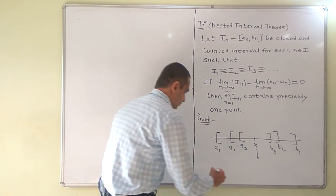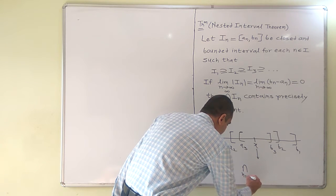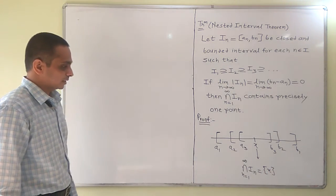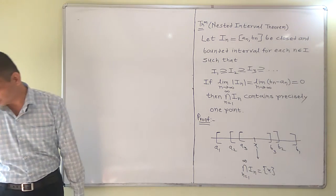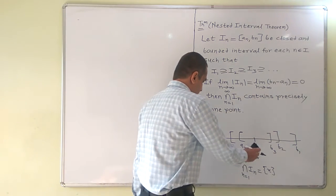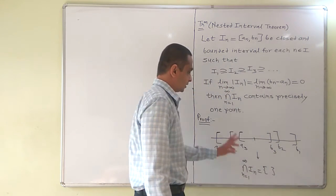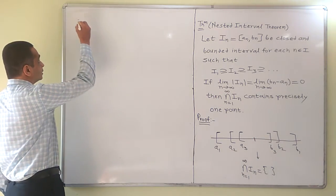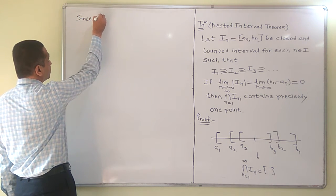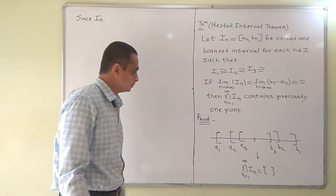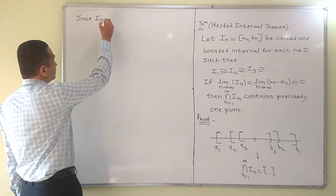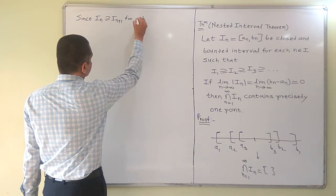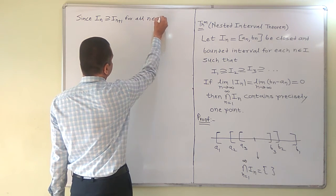So what we have to prove is this: the intersection of all these intervals will be a singleton set, and let us say that element is x. We have not yet specified x — that will be done during the proof. Now let us begin the proof rigorously. Since I_n contains I_{n+1} for all n belonging to the natural numbers,